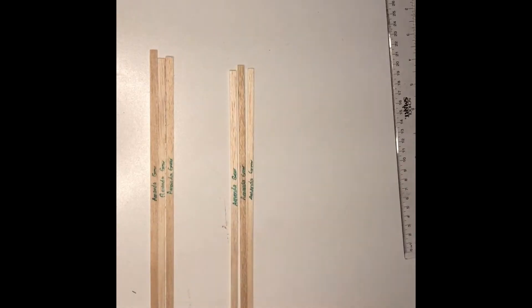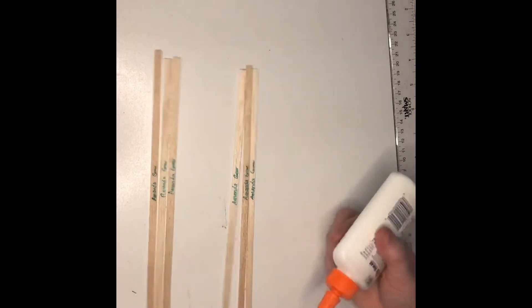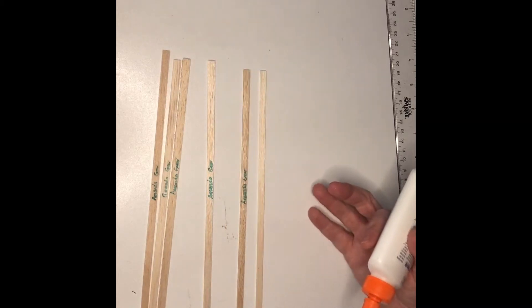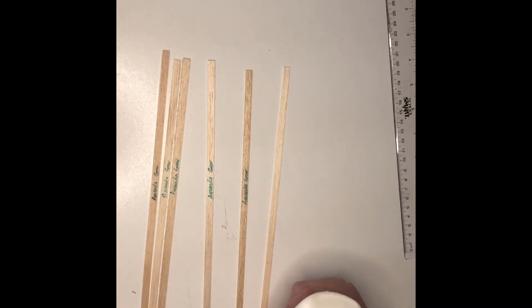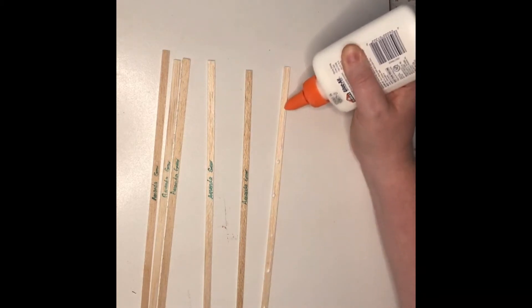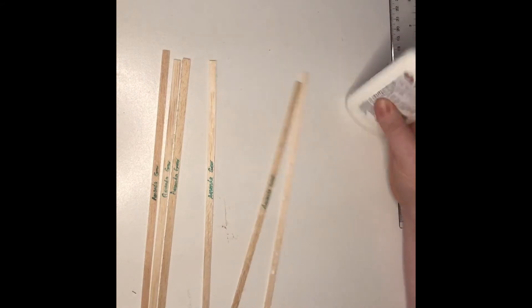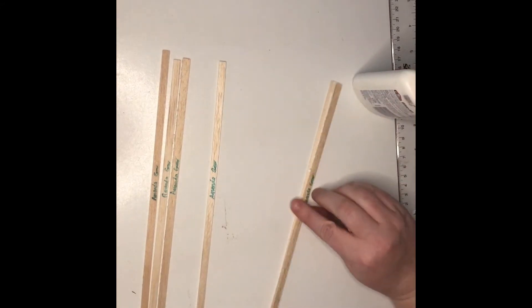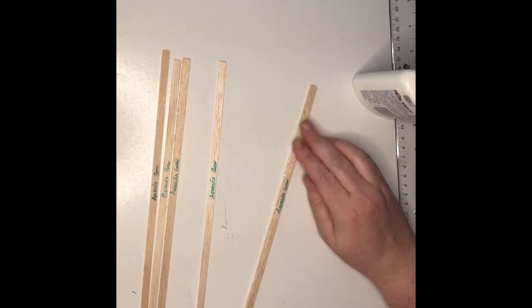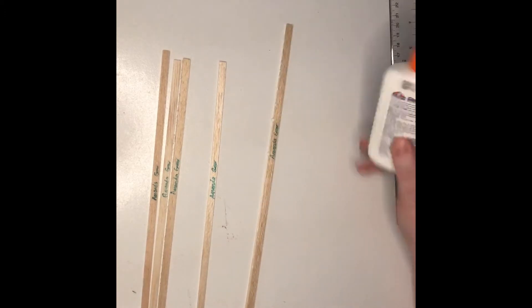Take your glue bottle and flip it over so your name is seen. Run a thin line of glue all the way along. Then take your middle beam—it doesn't matter which way your name goes because you won't see it—and put it on.